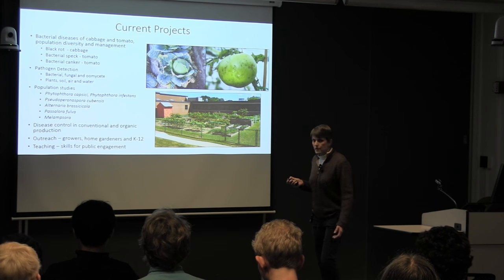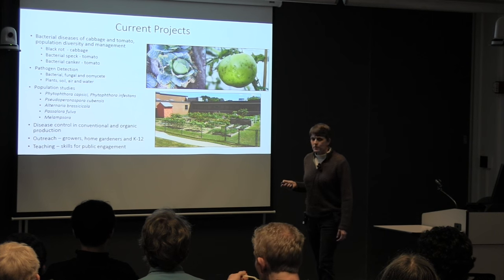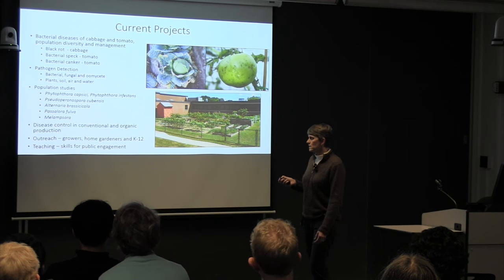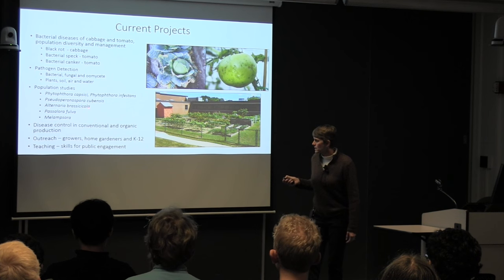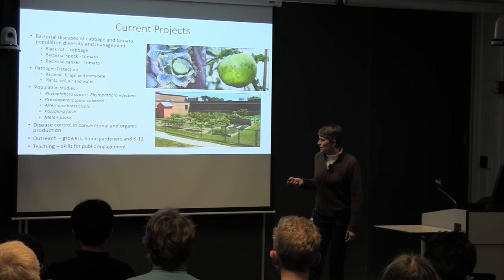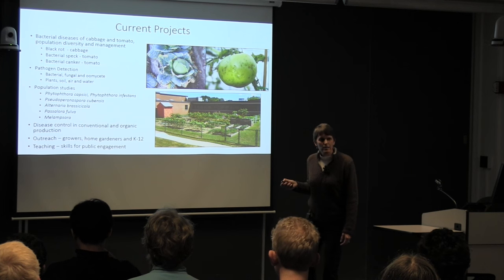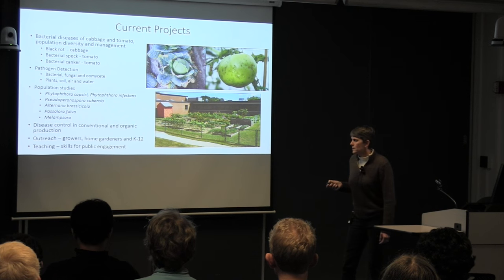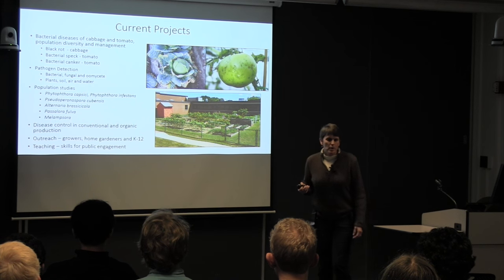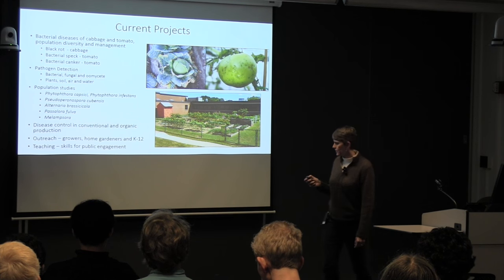We also work on cucurbit downy mildew, and in recent years I've started some projects on the true fungi, including Alternaria leaf spot on brassica crops, brown leaf mold on tomato which hits high tunnel tomatoes particularly hard. The newest project in my lab is a Melampsora rust project — willow rust on shrub willow, which is now a vegetable in the state of New York.